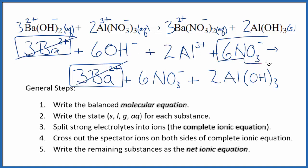I have six nitrate ions here and in the products. Spectator ions. Cross them out. What's left is the net ionic equation for barium hydroxide plus aluminum nitrate.